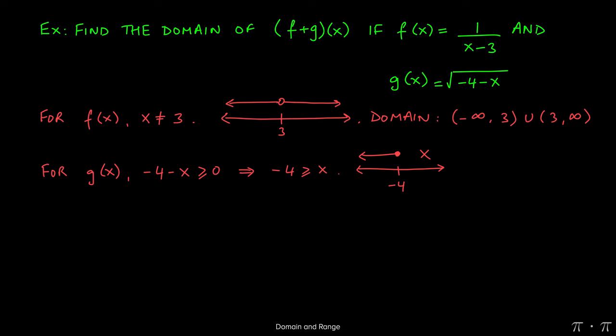So those numbers are in the domain. Now let's say we pick a number to the right of negative 4, say 0. Negative 4 is greater than or equal to 0. That's a false statement. That means any number to the right of negative 4, if we were to plug it into the g of x equation, it'll end up giving us a negative radicand, which we can't do anything with.